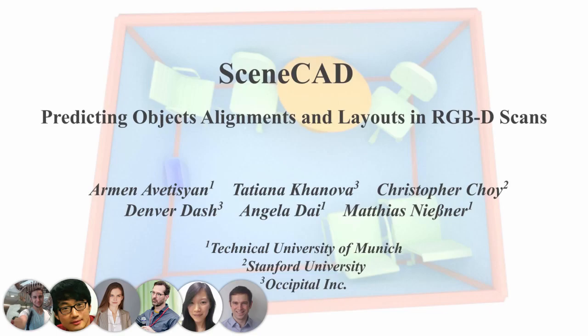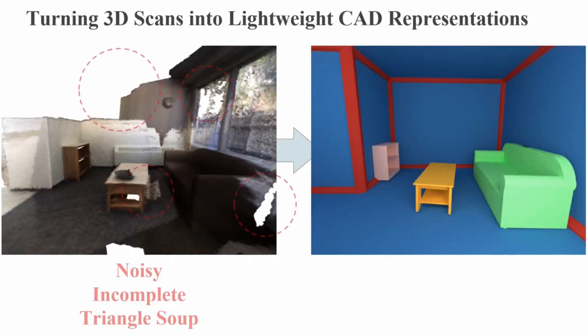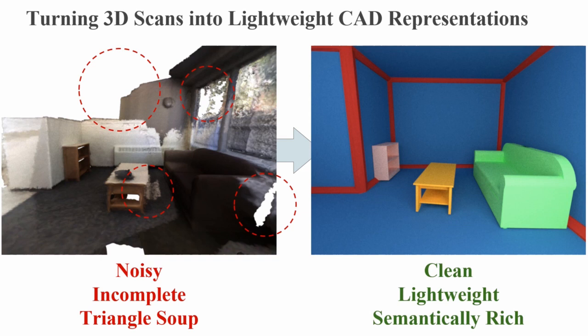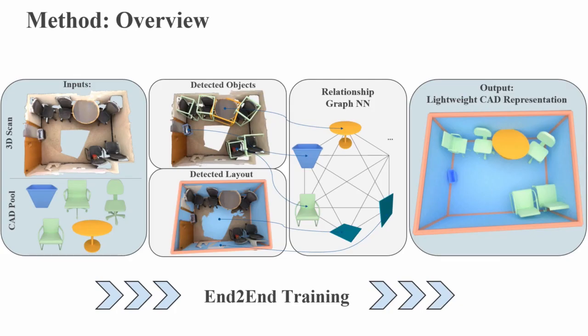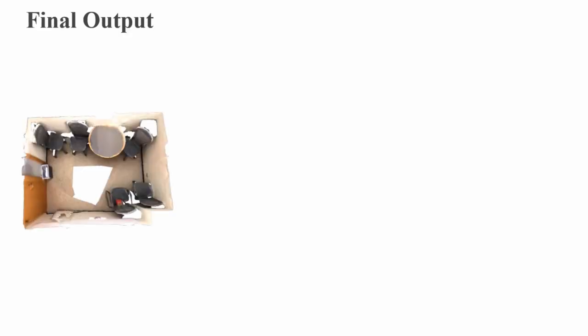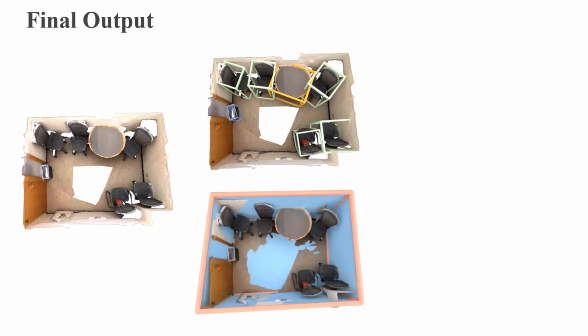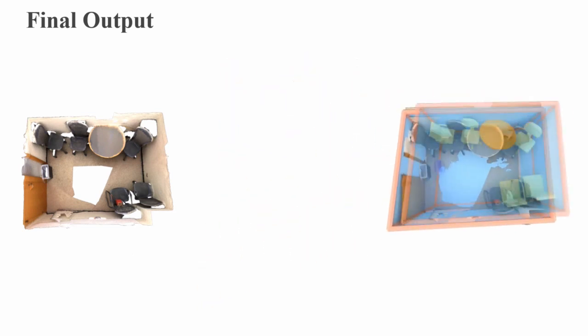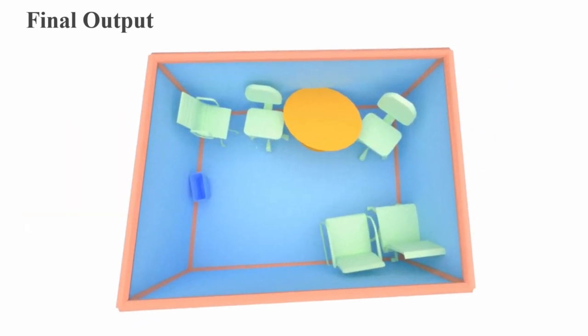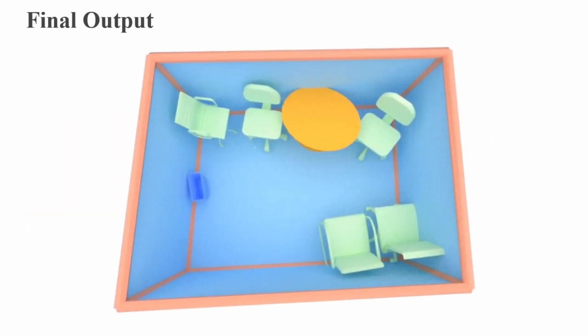We present SceneCAD. Our RGB-D scans tend to be very noisy and incomplete. We aim to transform them into a clean, compact CAD representation. Our approach predicts scene layouts and CAD model alignments and intercorrelates them with each other. Through our joint object layout estimation, we produce a globally consistent, lightweight CAD representation of the scene.